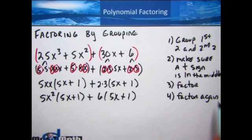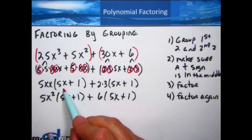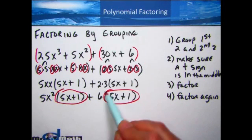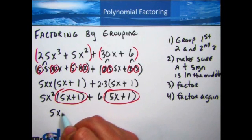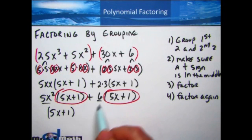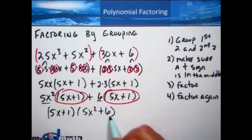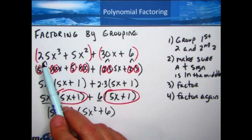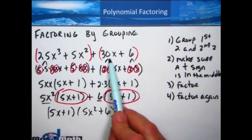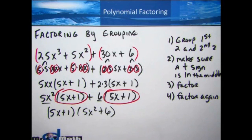Now we're at step four: factor again. We factor again because both terms now have (5x + 1) in common. We factor out (5x + 1), and what's left over is 5x² + 6. The final factored form is (5x + 1)(5x² + 6). If you multiply those back out using the distributive property you'd get 25x³ + 5x² + 30x + 6, confirming our answer.